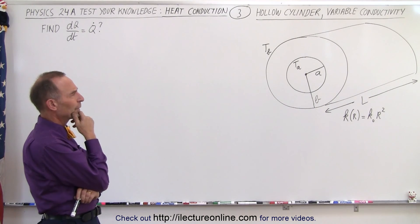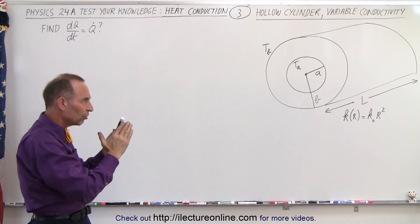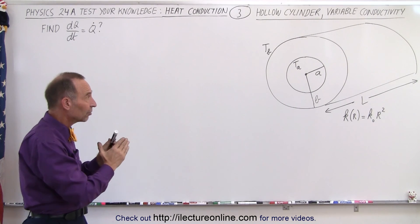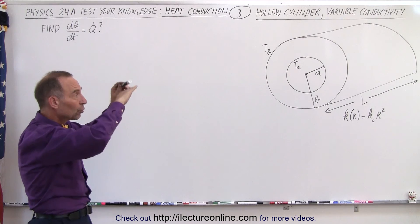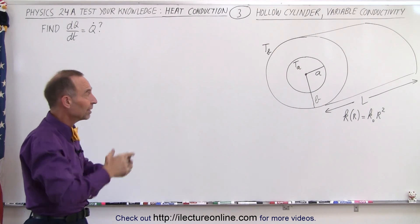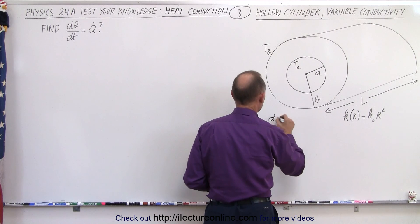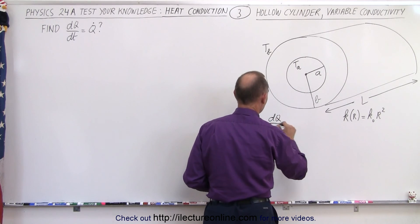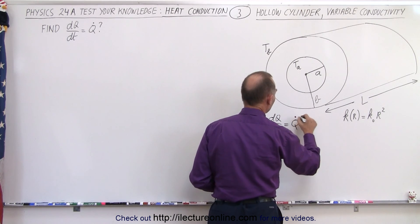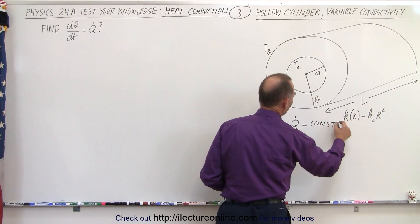So how do we do that? We need to realize that the amount of heat flowing through the cylinder from inside to outside has to be a constant, even though the cross-sectional area increases as you go from the inside to the outside. So dQ/dt, which could be written as Q-dot, is a constant. And that's important to remember.